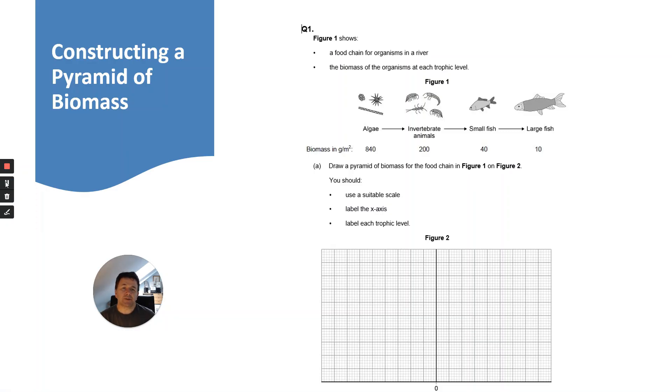Here's an exam question. Figure one shows a food chain for organisms in a river: the biomass of the organisms at each trophic level. It shows the algae which are producers, then the invertebrate animals which are primary consumers, small fish as secondary consumers, and large fish which are tertiary consumers.